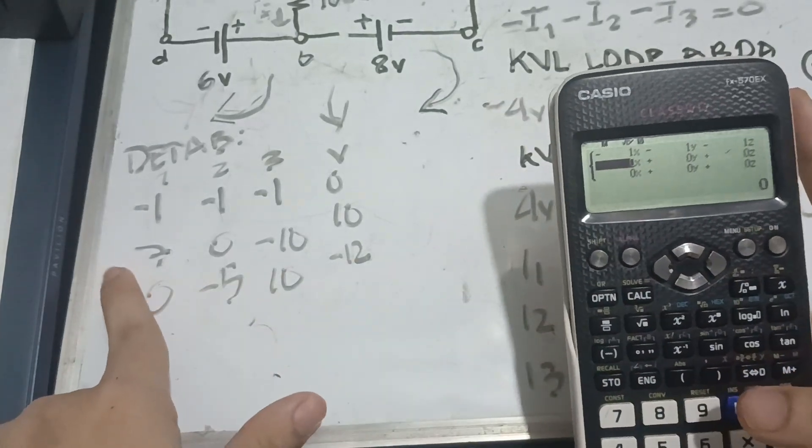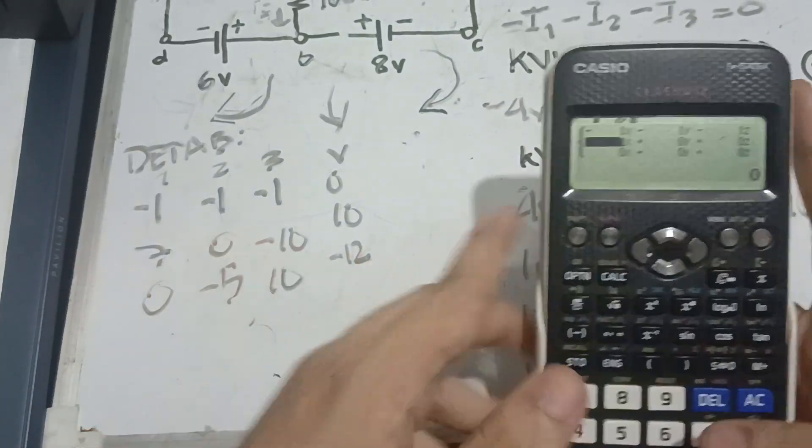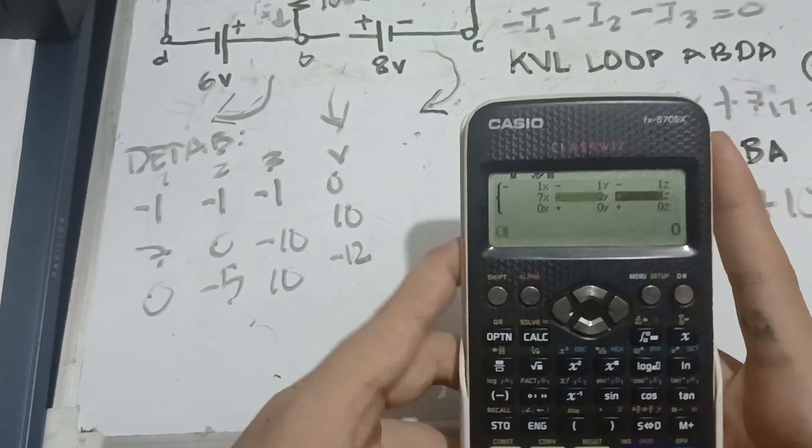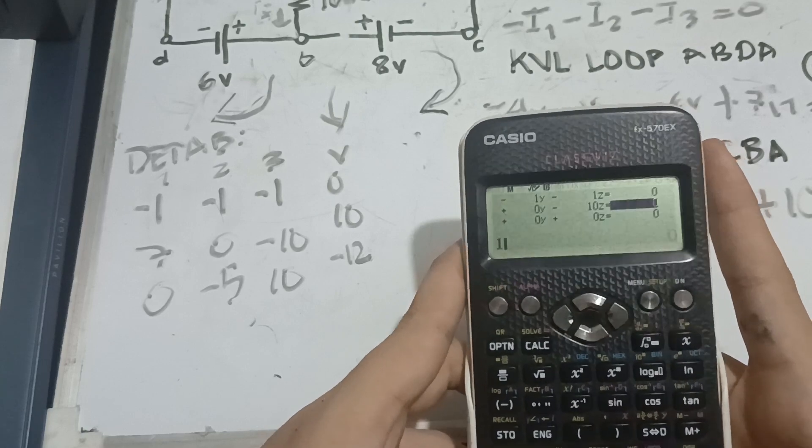Next one. Then, 7, 0, negative 10. 7, 0, negative 10. Then, 10.